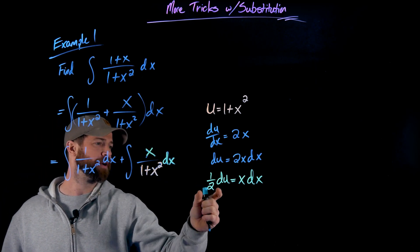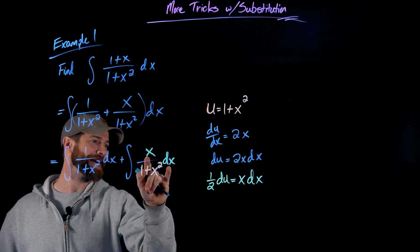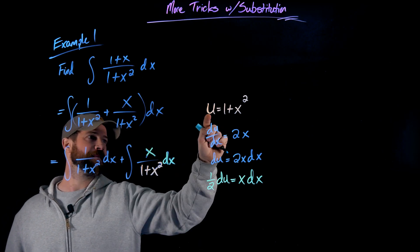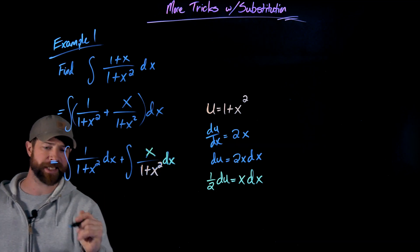But anyway, so I divided over that 2 over here. Now what I can do is I can substitute this x dx with 1/2 du. And then I have this u substitution of 1 plus x squared. And so my next move would be this.